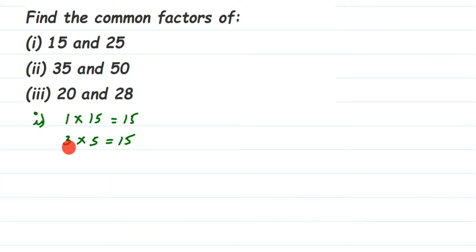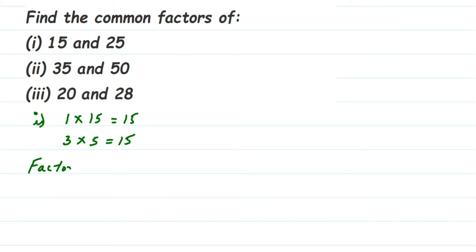Since I've written 3 × 5, I don't have to write the opposite 5 × 3 — it's not necessary. Then 6, 7, 8, 9, 10 — it doesn't go in any of those tables, except the 15 table itself, which I've already written as 1 × 15. So the factors of 15 are: 1, 3, 5, and 15.